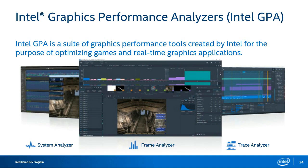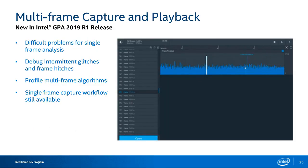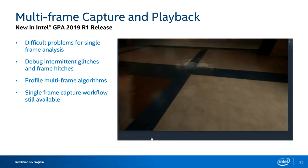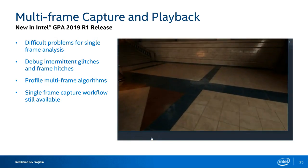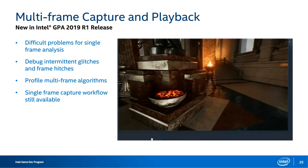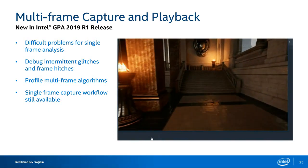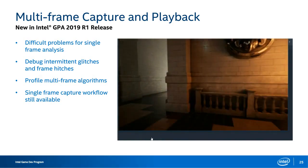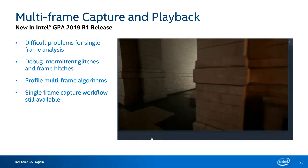A new addition to GPA is multi-frame stream capturing. Instead of capturing and profiling one frame at a time, you can now capture multiple frames at once. Capturing begins at the launch of your game and continues for the lifetime of that application. You can then open these streams in Frame Analyzer and iterate over the stream to identify intermittent glitches and frames with the highest frame times without recapturing data.